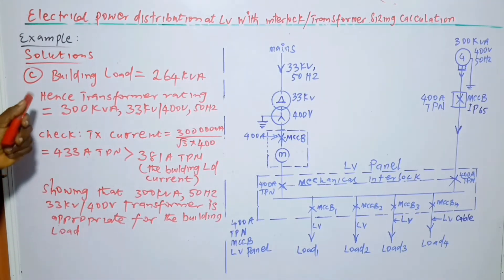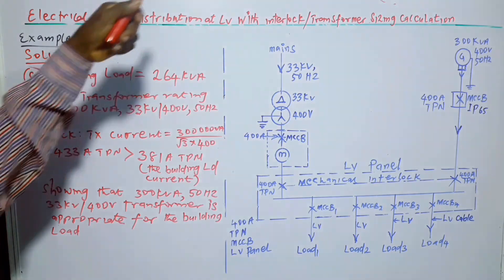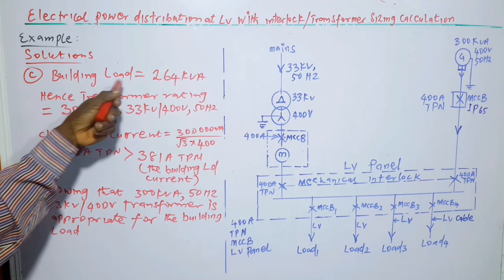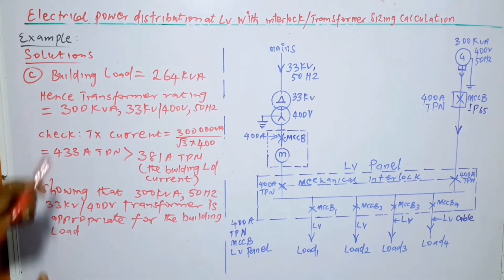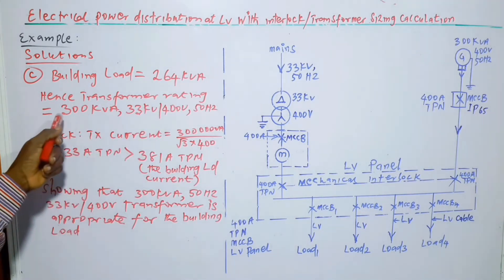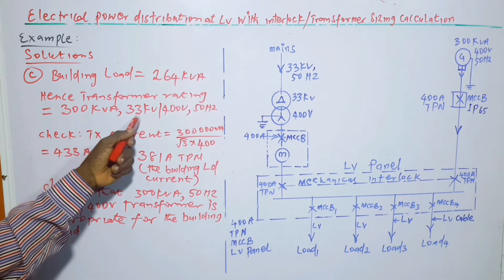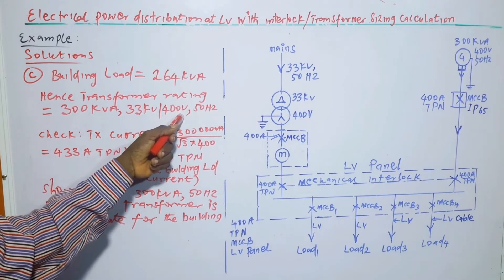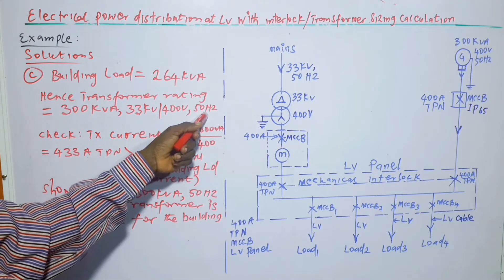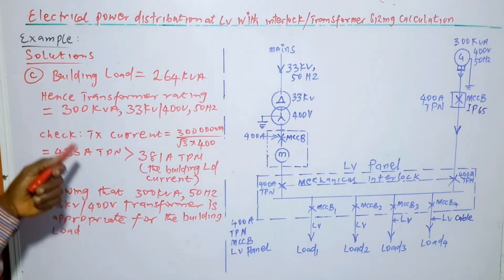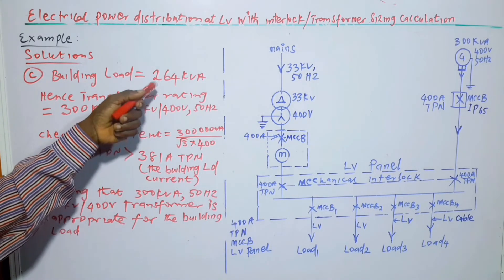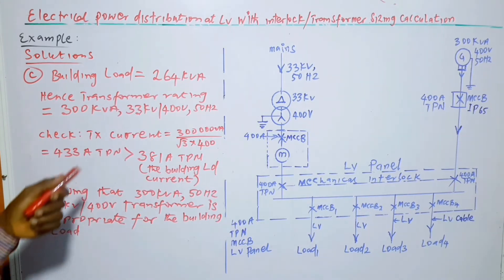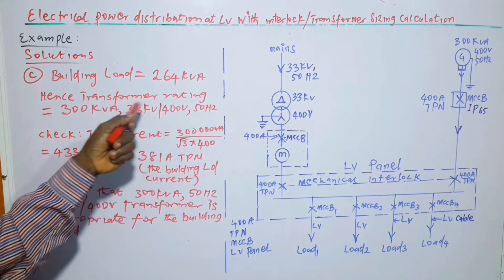Moving on, part C: to calculate the transformer rating. Building load is 264 kVA. Hence, transformer rating is equal to 300 kVA, 33 kV/400 V, 50 Hz. So we choose the transformer rating that is higher than the building load. So the next one is 300 kVA.